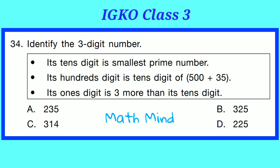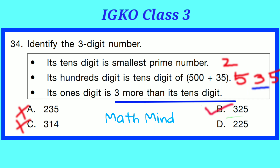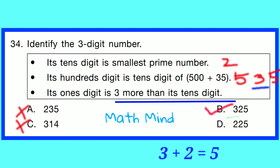Question No. 34. Identify the 3-digit number. Statement 1: Its tens digit is the smallest prime number. Statement 2: Its hundreds digit is the tens digit of 500 plus 35. Statement 3: Its units digit is 3 more than its tens digit. The smallest prime number is 2, so the tens digit is 2. The sum of 500 and 35 is 535; the tens digit of 535 is 3, so the hundreds digit is 3. The units digit is 3 more than 2, which is 5. So Option B is correct — the number is 325.